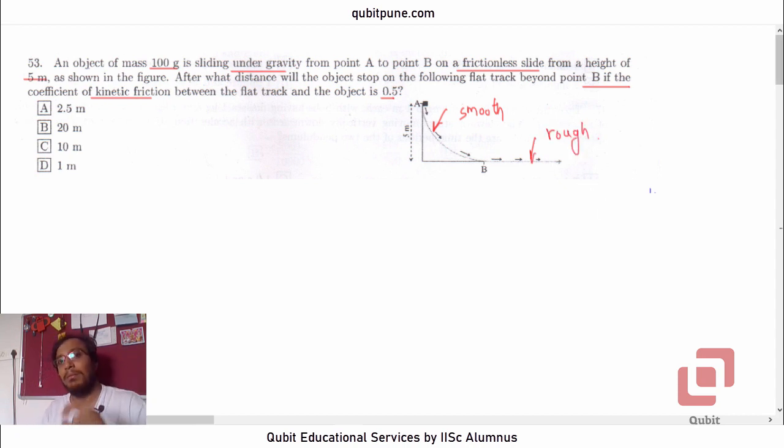So the object will slide down but it will not lose any energy from A to B. Because the object is not going to lose any energy from A to B, we can apply energy conservation there. So we can directly calculate the speed at B, mass is not going to play any role here. Right? So that speed at B, VB will be under root 2gh. So we may approximate G as 10 now and if we approximate G as 10 then height is 5. So this will be 10 meters per second.